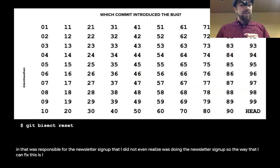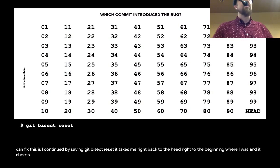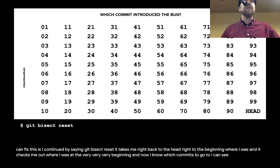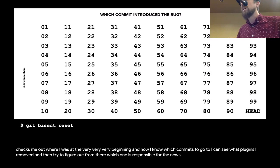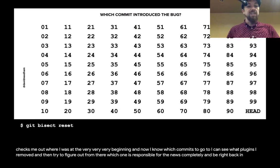I probably removed a plugin that was responsible for the newsletter signup that I did not even realize was doing the newsletter signup. The way to fix this is to continue by saying 'git bisect reset.' It takes you right back to HEAD, right to the beginning of where you were. Now I know which commit to go to, I can see what plugins I removed, and try to figure out which one is responsible for the newsletter signup — or I could just revert that commit completely.